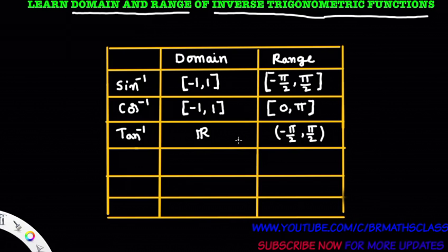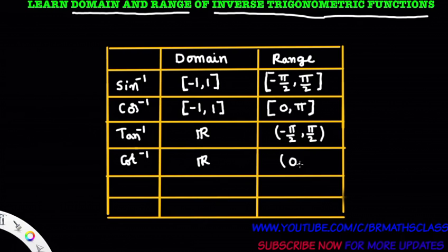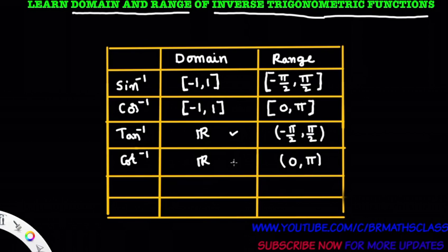If we follow a particular order to remember domain and range of inverse trigonometric functions, it becomes easy. Cot inverse is a function whose domain is the set of all real numbers and whose range is the open interval 0 comma pi. Observe that the domain of both tan inverse and cot inverse are the set of all real numbers, while the range of tan inverse is open interval minus pi by 2 comma pi by 2 and the range of cot inverse is open interval 0 comma pi.